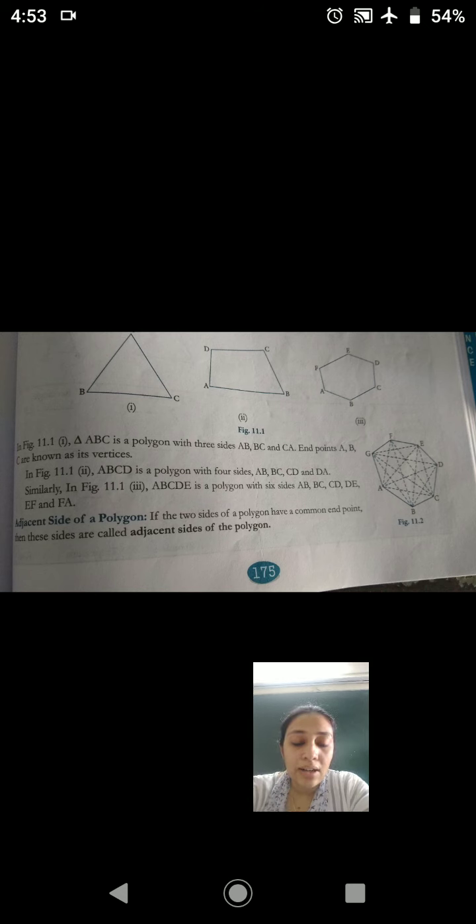In this we had an introduction and then started polygons. Polygons include triangle, quadrilateral, hexagon, pentagon, octagon, all of those, right?